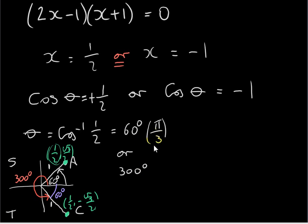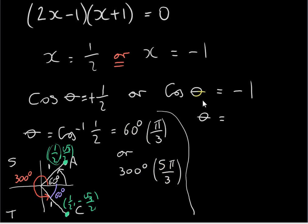In radians, 300 degrees is 5 × 60, which is 5π/3 radians. Now let's get θ from the second equation, cosθ = −1. We want the inverse cos of −1. Most calculators will give you 180 degrees.